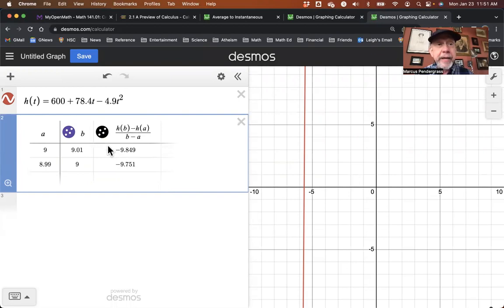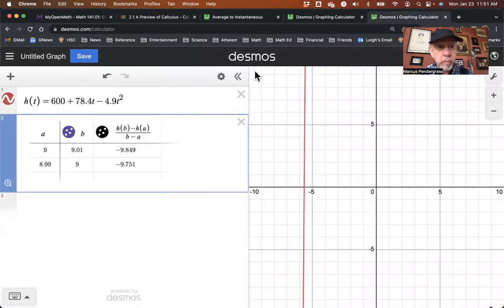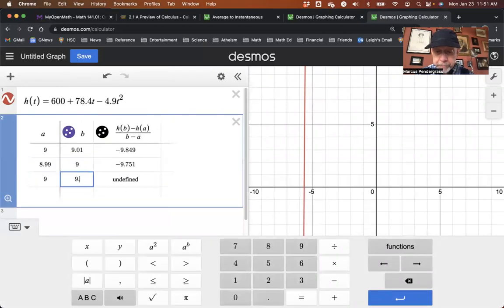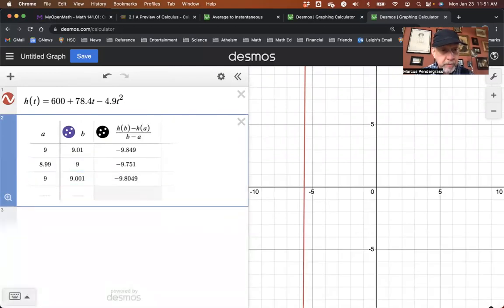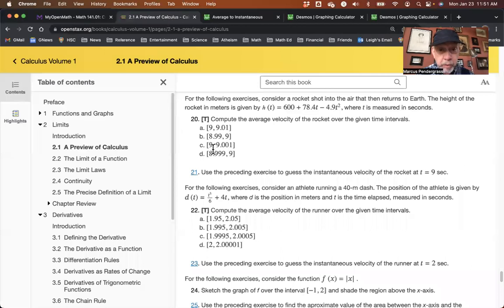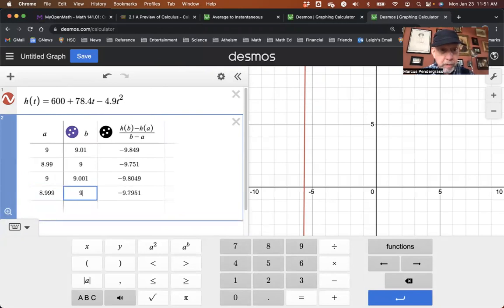But in any case, we can just go ahead and knock all these out real quickly. For part C, we need 9 to 9.001. So I can just add that as a row. And there you have that. And then in the last part, we wanted 8.999 up to 9.001. And there we have that rate of change.